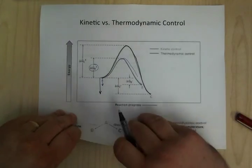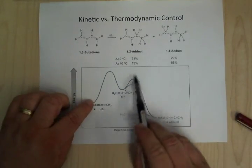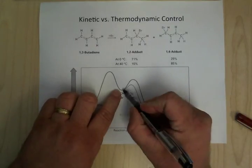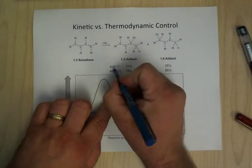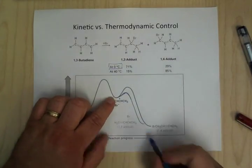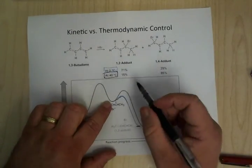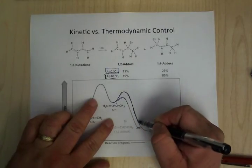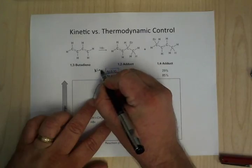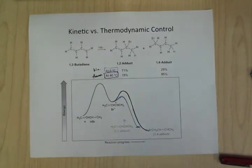That's all there is to it. Under low temperature conditions, it goes over the small barrier — kinetic control. Under hotter conditions, it goes over the big barrier to get to the best possible product — thermodynamic control. So: low temperatures give kinetic control, high temperatures give thermodynamic control. Good luck.